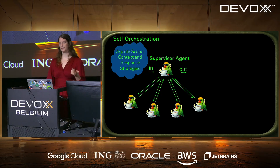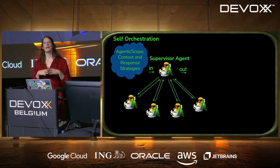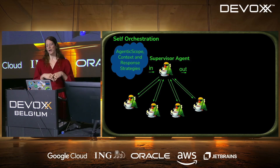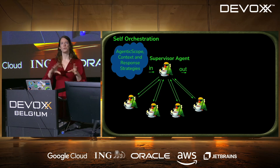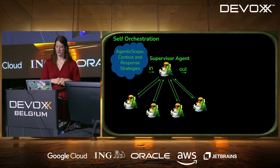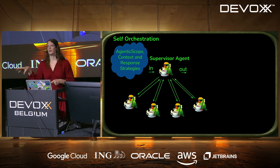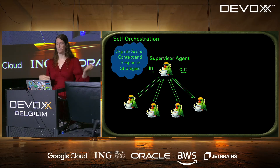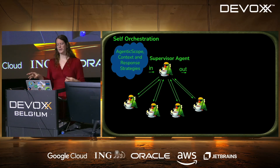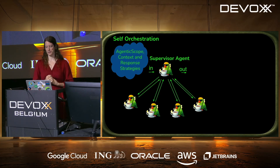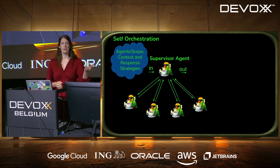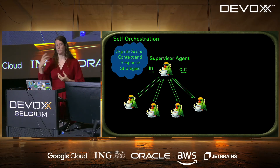The other pattern we have is the supervisor agent, where the agent itself chooses when to call which sub-agent. This is for when your process is not so well defined — for example, a travel planner where depending on weather, preferences, or cancellations your whole flow might change. Then you're better off with a supervisor agent. You have a bit less control, but also a bit less programming work.